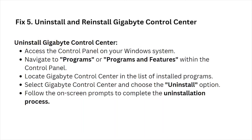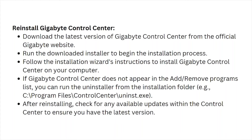Fix number five is to uninstall and reinstall the Gigabyte Control Center. To uninstall, access the Control Panel on your Windows system, navigate to Programs and Features. Locate the Gigabyte Control Center in the list of installed programs, select it, and choose the Uninstall option. Follow the on-screen prompts to complete the uninstallation process.